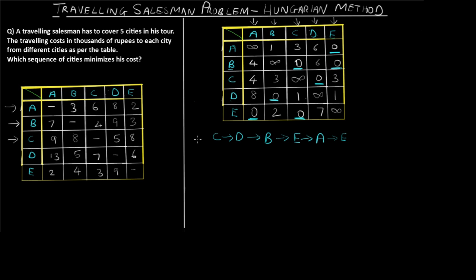Since zero-only assignment fails, we now consider the next smallest value — 1 — as well. Starting from A, we go A to B (using value 1). From B we select C. From C the only option is D. From D, since B is covered, we go to E. From E we return to A.